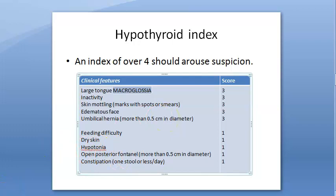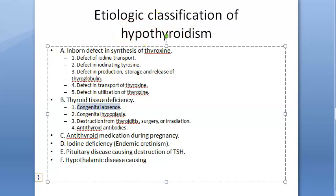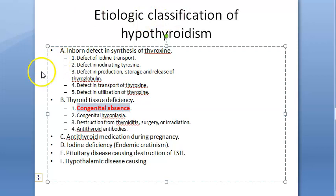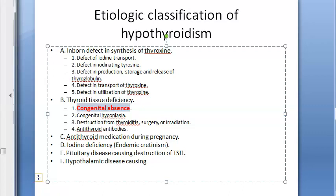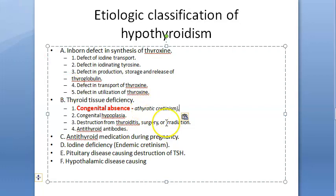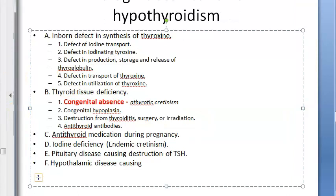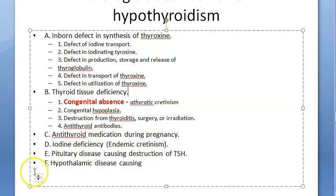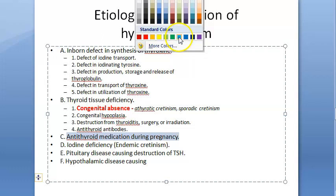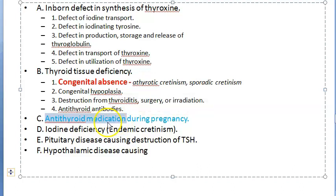The main causes of congenital hypothyroidism include: absence of the thyroid gland itself, called athyreotic cretinism; or a rudimentary thyroid — thyroid dysgenesis — also called sporadic cretinism. Another cause is anti-thyroid medication used during pregnancy, where the mother's anti-thyroid drugs suppress the baby's thyroid levels.